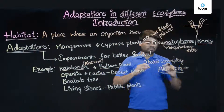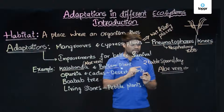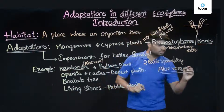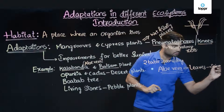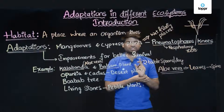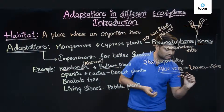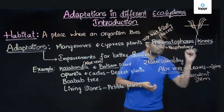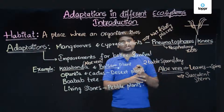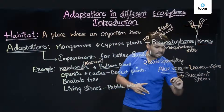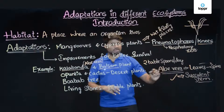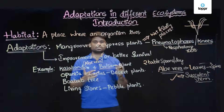Aloe vera can grow in conditions where water is scarce. First, a plant must prevent water loss from its own body. Water is lost mainly through the leaves, so in aloe vera, leaves are reduced to spines — small spines. The greenish structures we see in aloe vera are not leaves; they are succulent stems. The stem stores water as mucilage, which is used when water is not available — this is aloe vera's adaptation.